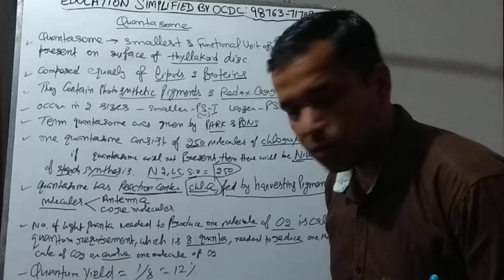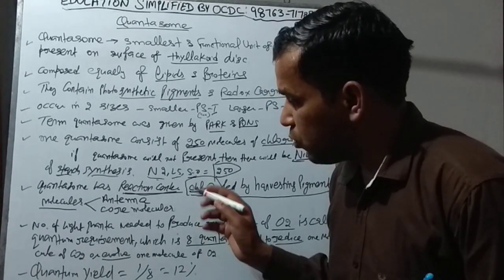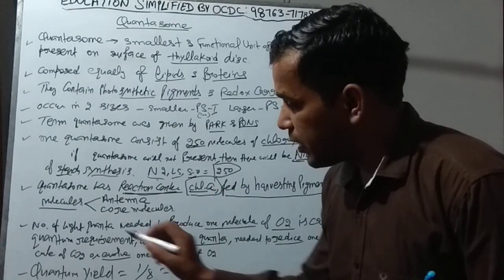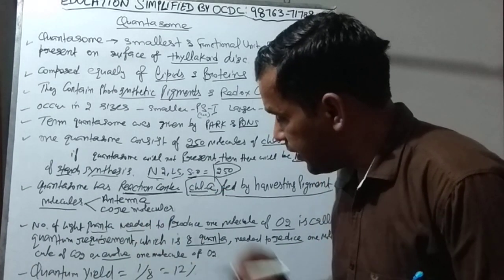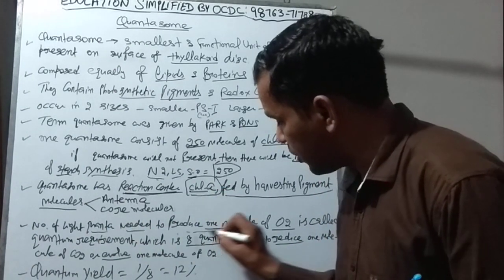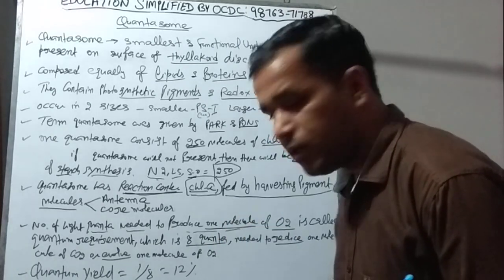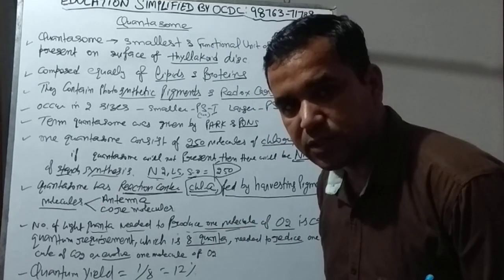The harvesting pigment molecules are of two types: the core and the antenna. The core is chlorophyll A, which acts as the reaction center, while all the other surrounding pigments are called antenna pigments.